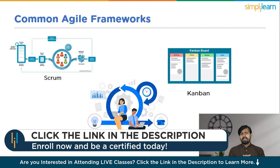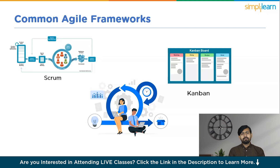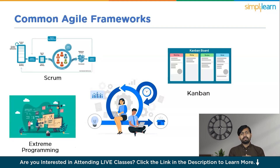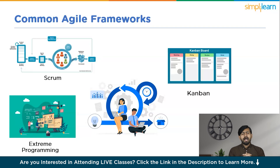Next we have Kanban, a visual management framework that focuses on workflow optimization and continuous delivery. Kanban boards are used to visualize work in progress, allowing teams to identify bottlenecks and optimize their process accordingly. Next is Extreme Programming, an Agile framework that emphasizes engineering practices such as test-driven development, pair programming and continuous integration. Extreme Programming teams work collaboratively to deliver high-quality software quickly and efficiently.